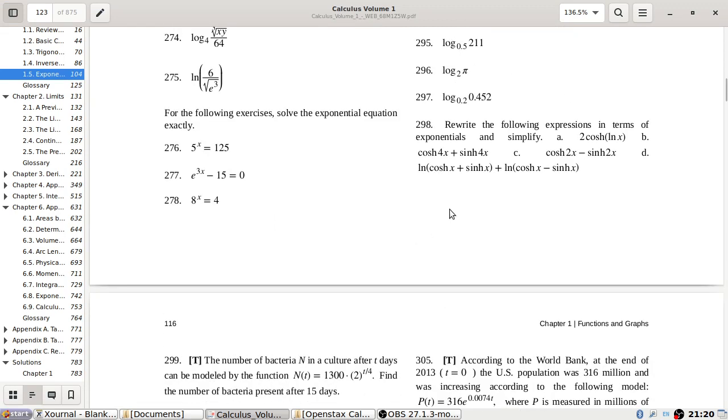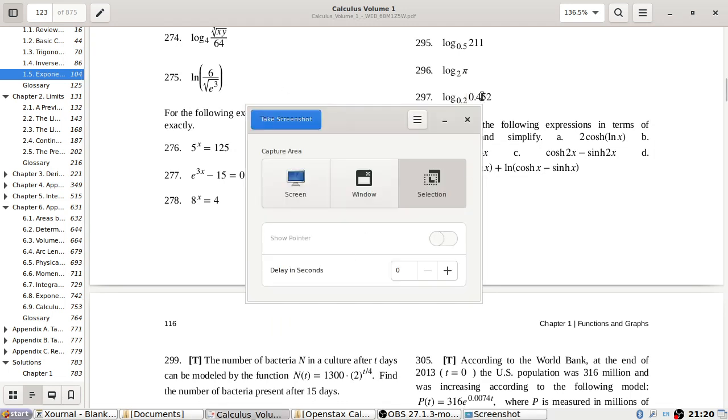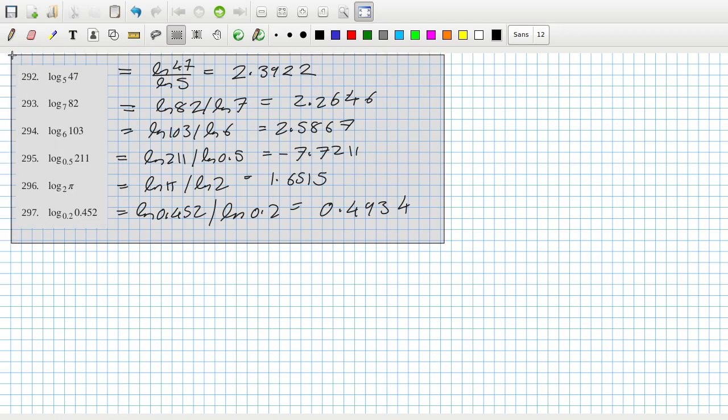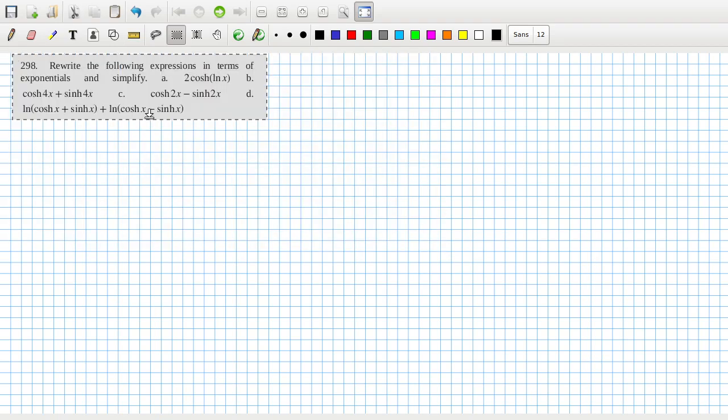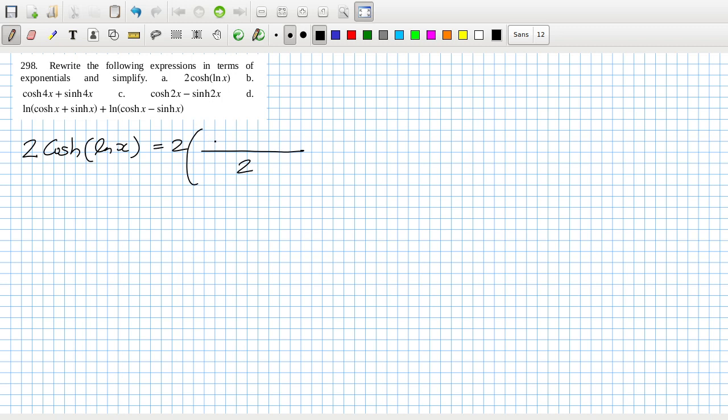And then the last one here. They don't have the answer for this last one here. Rewrite the following expressions in terms of exponential and simplify. Okay so if I remember my definition correctly, 2 hyperbolic cosine of log x, so that would be 2 over 2, and the cosh one is the one with the plus in it, so that's e to the log x plus e to the minus log x. So they cancel, it's just 2x.